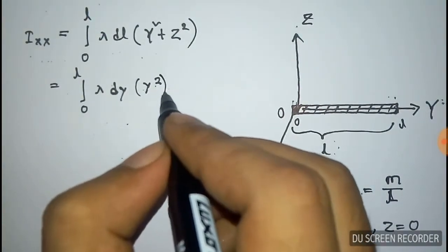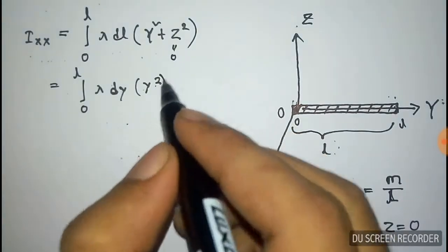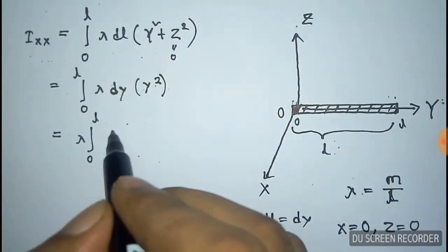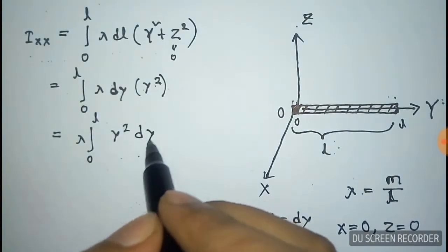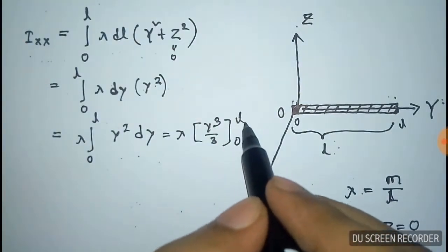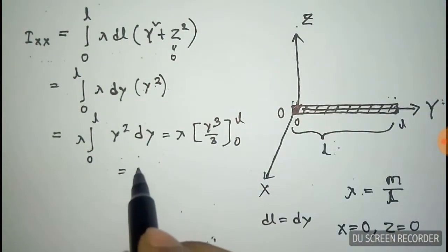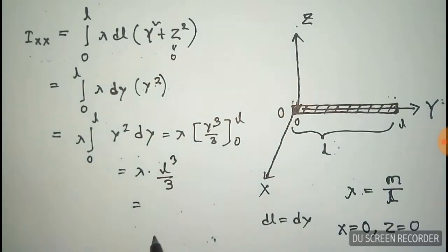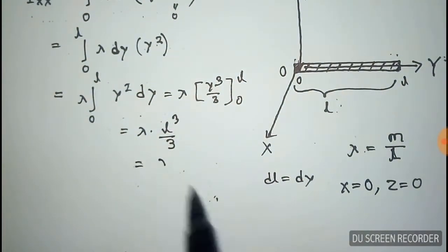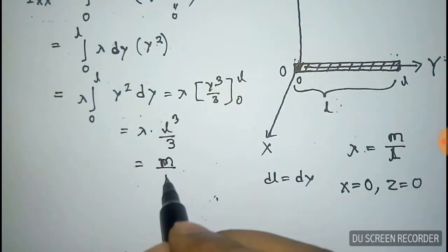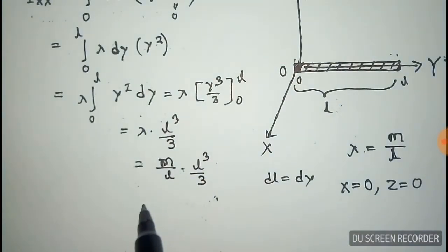Y square plus the value of z is 0, so this is 0. Lambda is a constant so it comes out of the integration and after integration it will be like lambda y cubed over 3. Now we put the value of lambda, this is m by L, now this is m L square by 3.